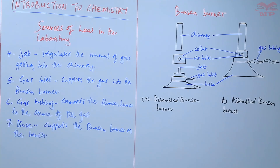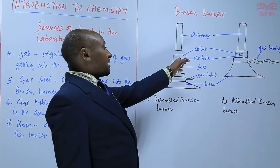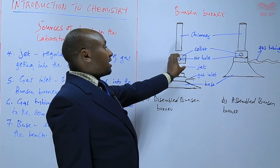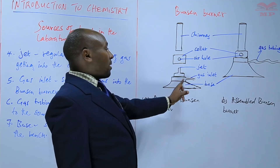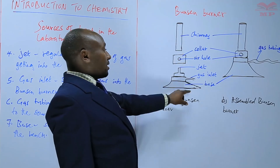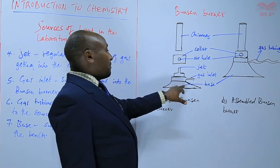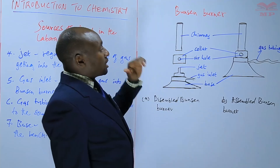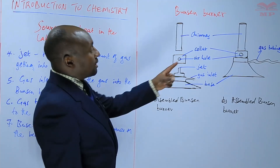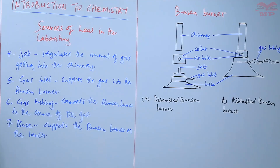So basically, the parts of the Bunsen burner are: the chimney, the collar with an air hole that lets in air and can be turned to open or close it, the jet that regulates how much gas gets into the chimney, the gas inlet that allows gas to get into the Bunsen burner, the base that supports it on the bench, and the gas tubing that connects the Bunsen burner to the source of gas.